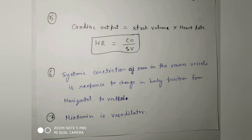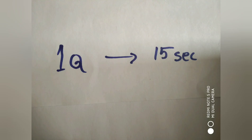Cardiac output equals stroke volume times heart rate; heart rate equals cardiac output divided by stroke volume. Systemic constriction of venous vessels is the response to changing body position from horizontal to vertical when waking up. Also, histamine is a vasodilator.